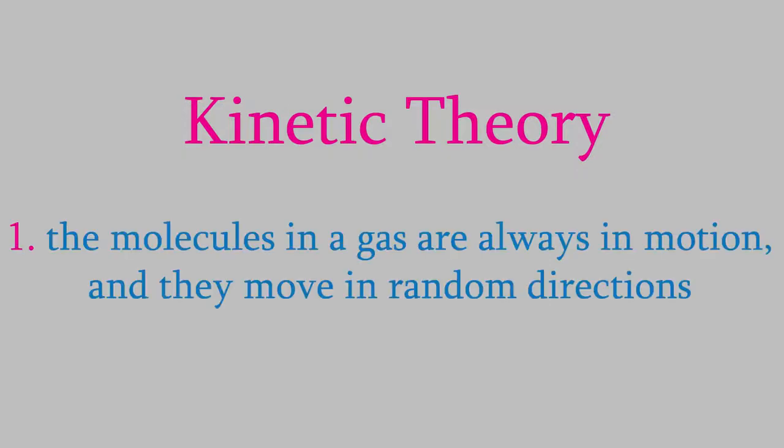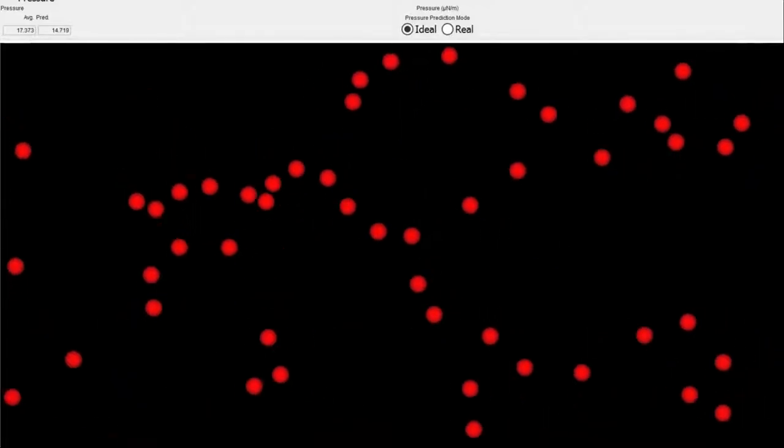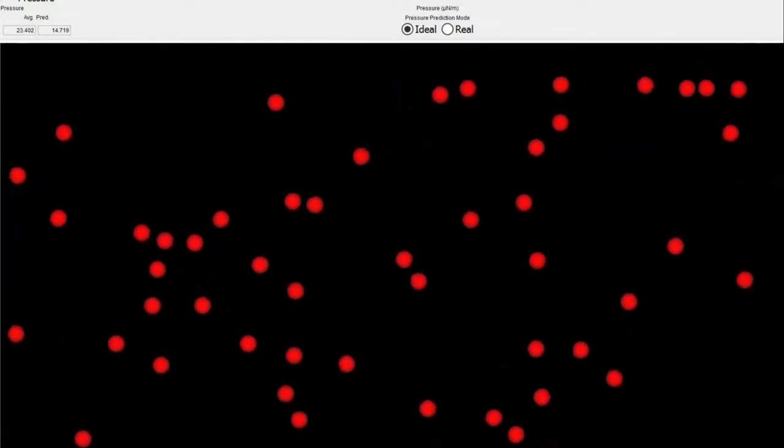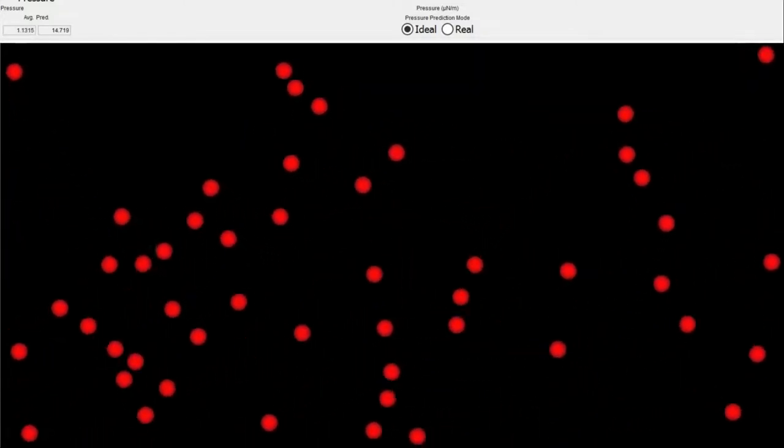First, it says that the molecules in a gas are always in motion, and they move in random directions. The fact that they move in random directions is actually pretty important. Imagine if the air molecules in your room could all move in the same direction at once. That would mean the side of the room that the molecules have moved away from would suddenly contain a vacuum. We know that things like that don't happen.